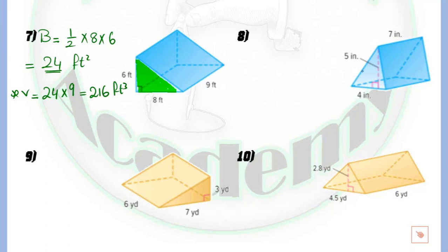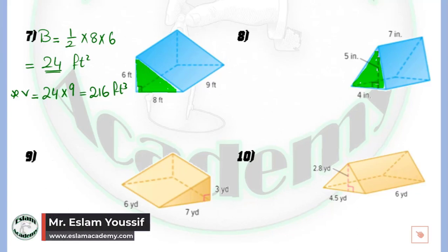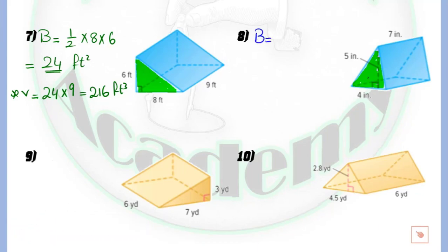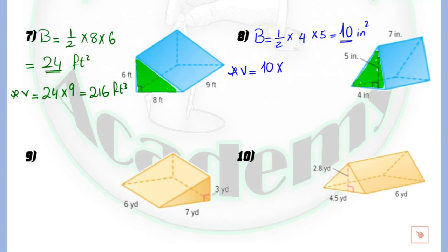In question number 8, identify the base — the base is a triangle. To find the volume: first find the area of the triangle, which equals one-half multiplied by the base (which is 4) multiplied by the height (which is 5), equaling 10 square units. Then the volume equals 10 multiplied by the height of the prism, which is 7, giving an answer of 70 cubic units.